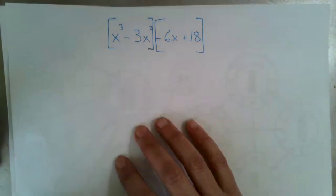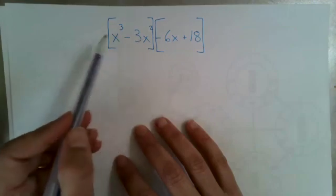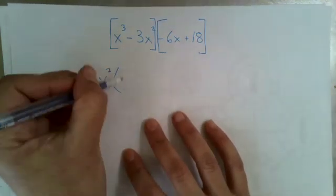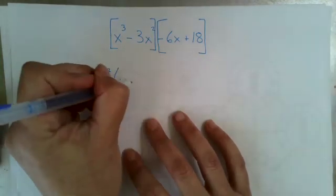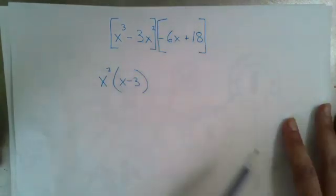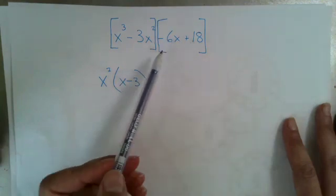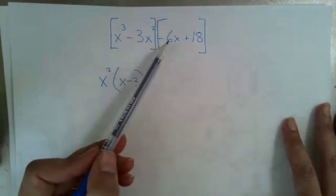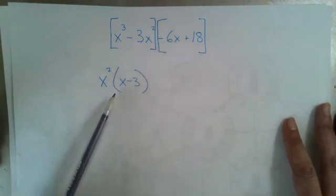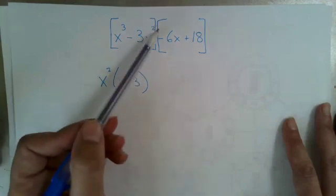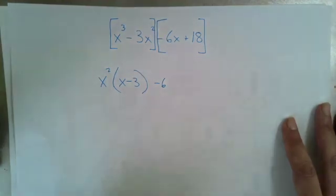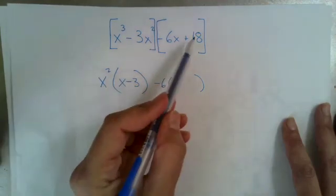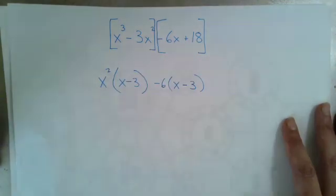What is the largest thing common to both terms in the first group? Our coefficients don't have anything in common, but our x's do. So we've got an x squared. x cubed divided by x squared leaves me with an x, and minus 3x squared divided by x squared leaves me with a minus 3. Now for the second group, a 6 is common to both terms, but if we just pull out a 6 we're left with negative x, and that's not what we want. We want a positive x. So we're going to pull negative 6 out of both terms. Negative 6x divided by negative 6 leaves us with just x. And 18 divided by negative 6 leaves us with that negative 3 we were hoping for.